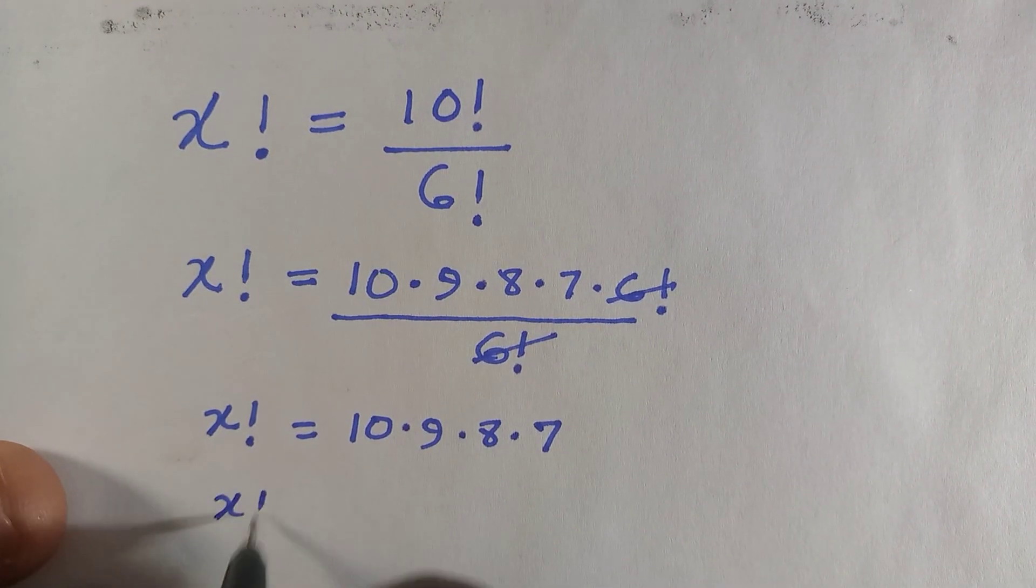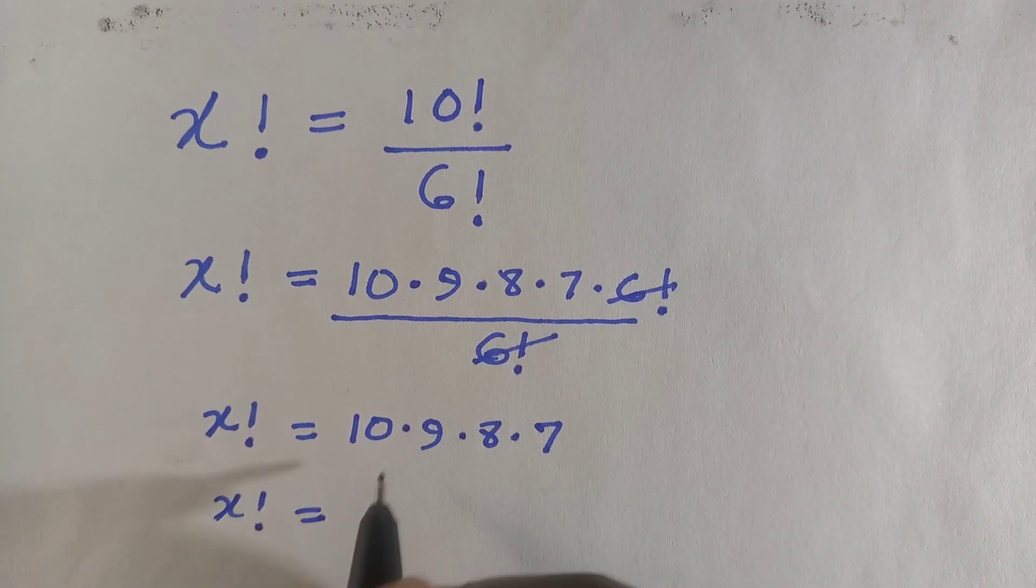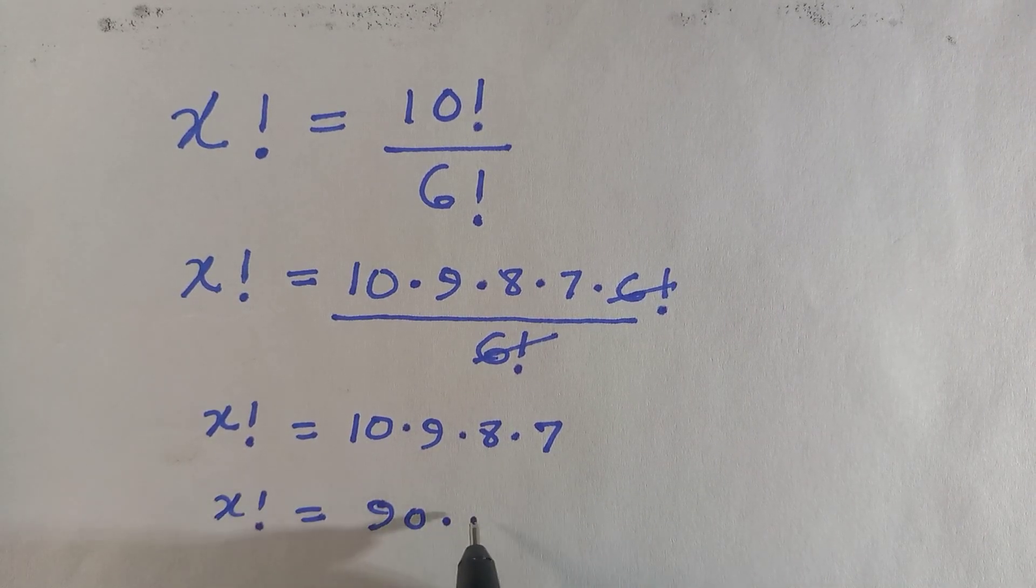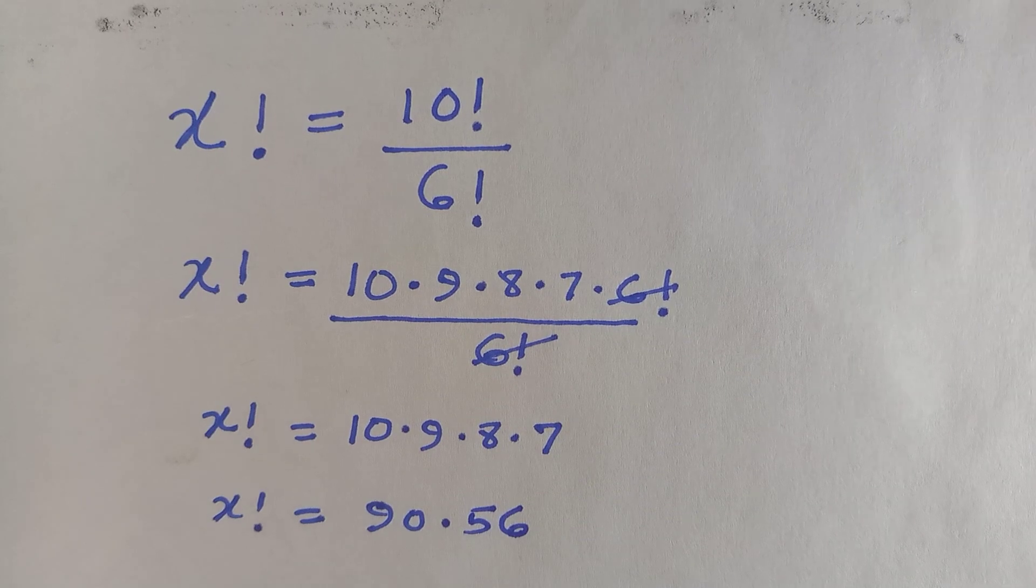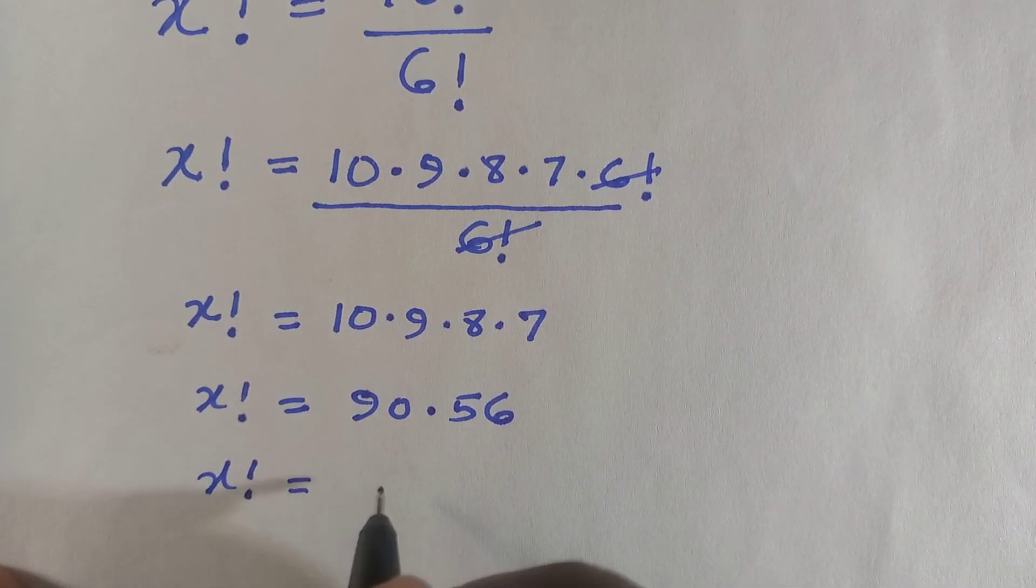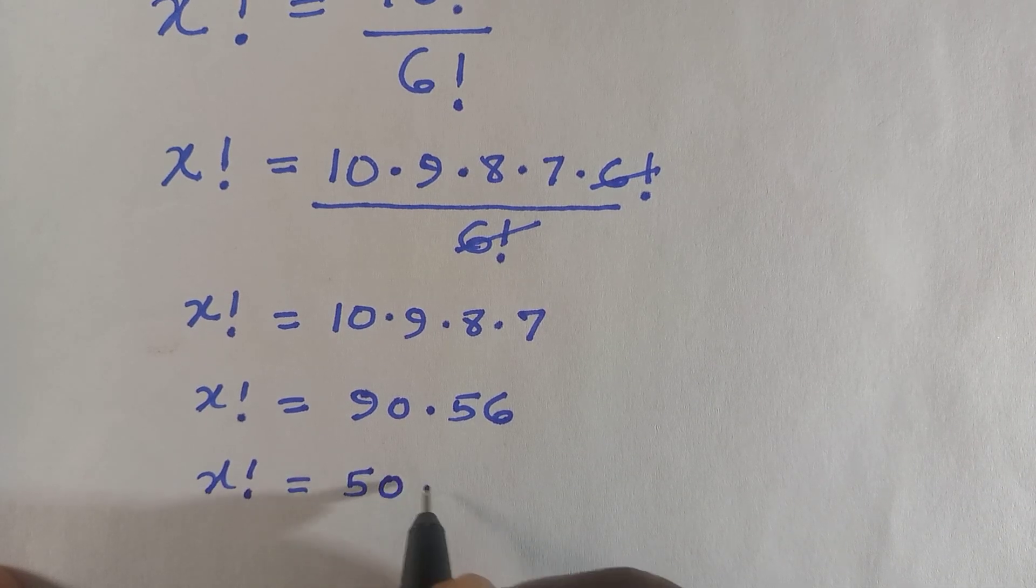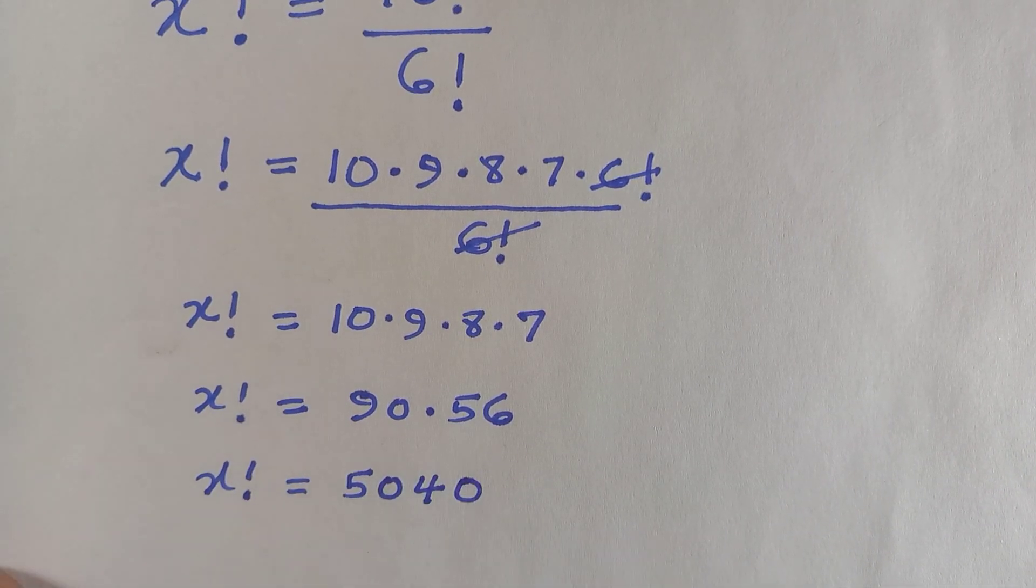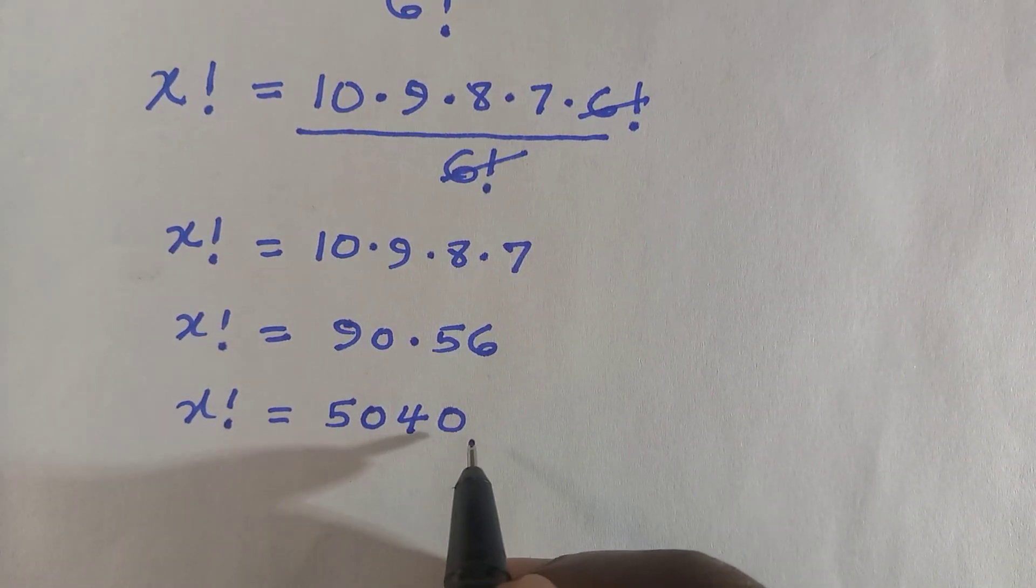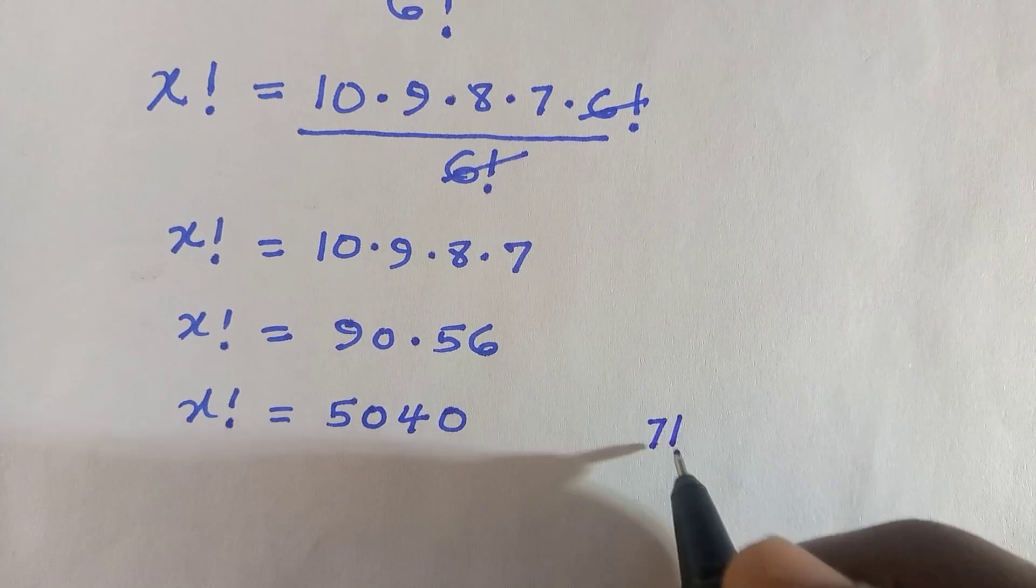By multiplying all these together, we are going to have 90 times 56, and 90 multiplied by 56 is 5040. So 5040. This 5040 is equivalent to 7 factorial.